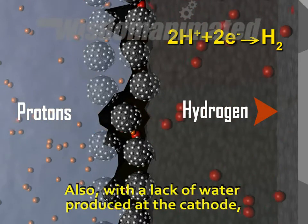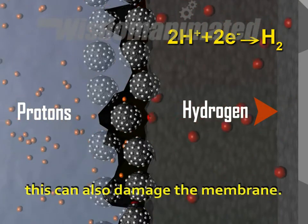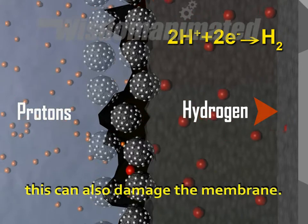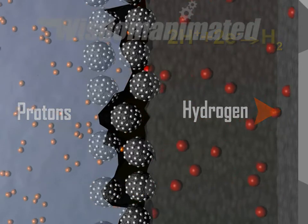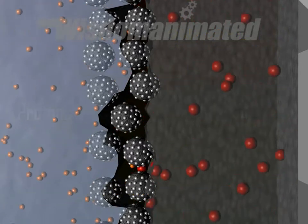The cathode potential drops due to the lack of oxygen and the presence of hydrogen. Also, with a lack of water produced at the cathode, this can damage the membrane.